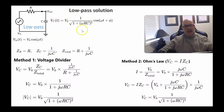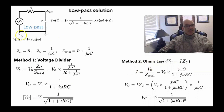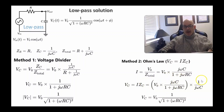Another method to calculate this is by using Ohm's law for AC circuits. Ohm's law for AC circuits tells us that V equals I·Z, where Z is the impedance. The maximum current in the circuit equals V_0, the amplitude of the input voltage, divided by the total impedance. The voltage across the capacitor then equals the current times the impedance of the capacitor, which is 1 over j·omega·C. Both methods give the same formula for the amplitude of the capacitor voltage.